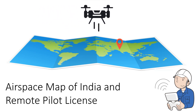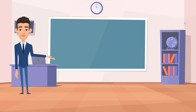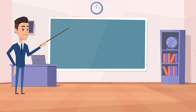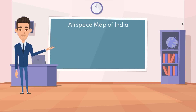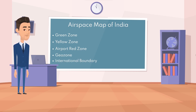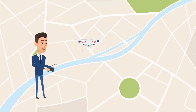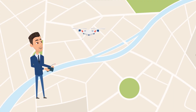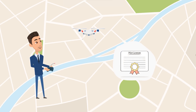Hello survey athletes. In this video we will be discussing the airspace map of India. We will also be discussing the different zones like the green zone, yellow zone, airport red zone, geo zones and international boundaries present in the airspace map of India. And finally we will also be discussing how to get the remote pilot license.